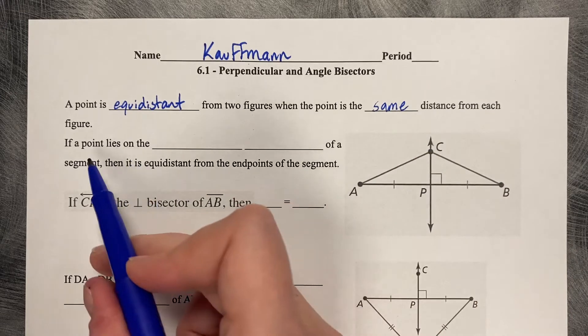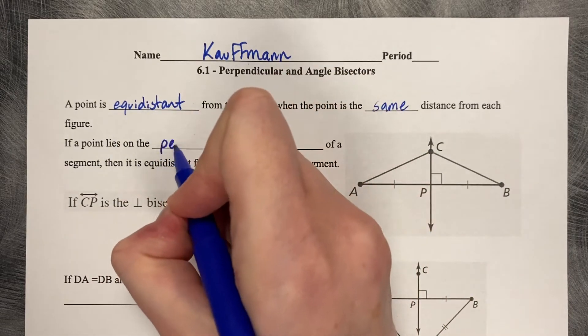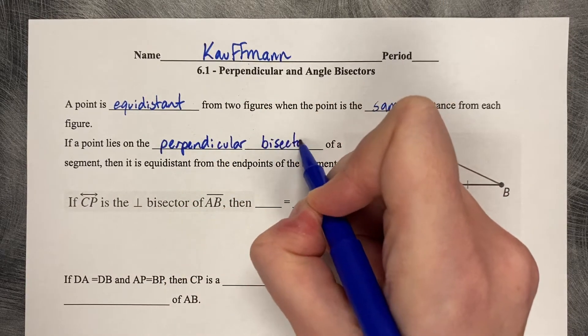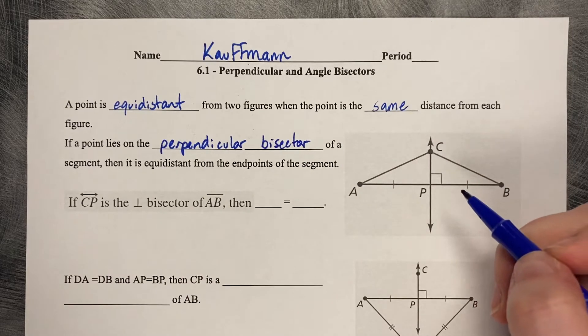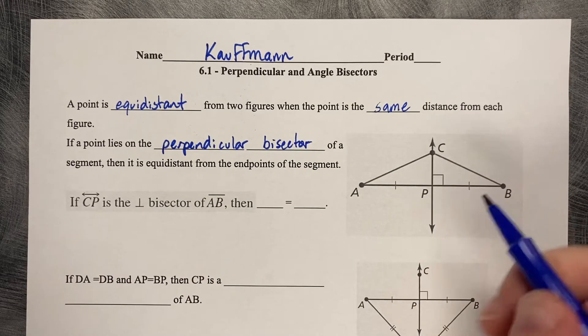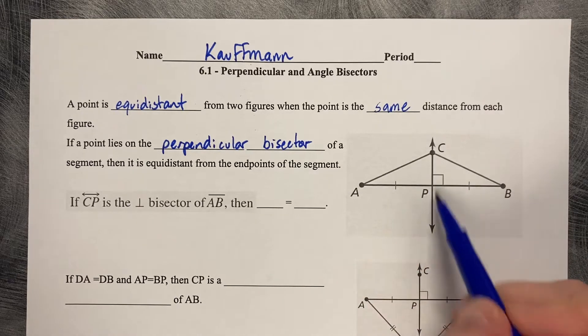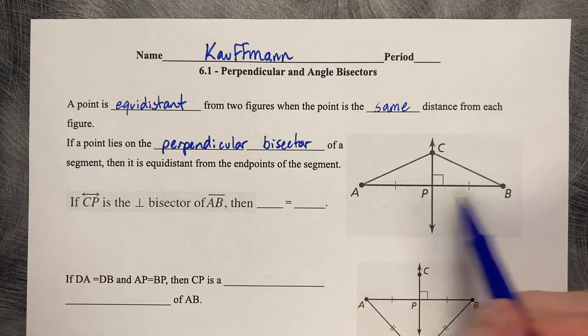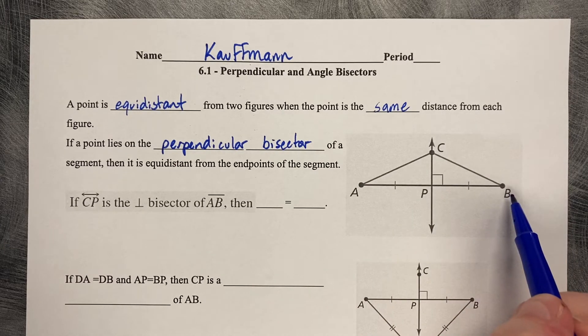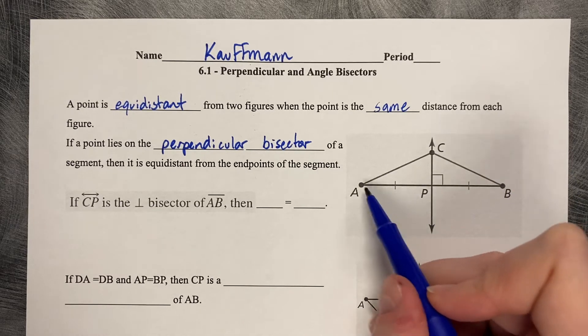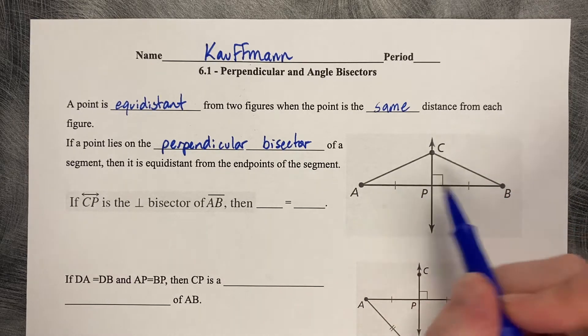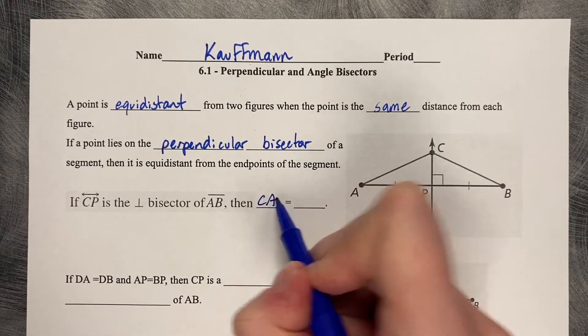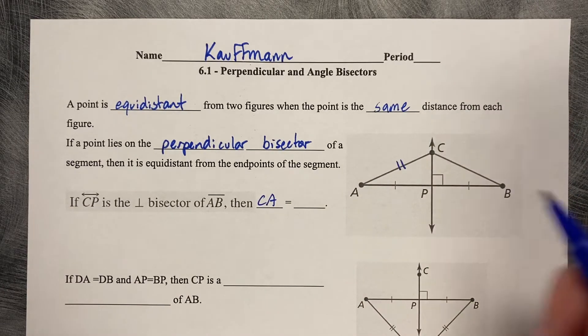This is the key today: if a point lies on the perpendicular bisector of a segment, then it is equidistant from the endpoints of the segment. So we're saying that if CP, that segment, is a perpendicular bisector of AB, and we can see that it's a bisector because AP is congruent to PB using the tick marks, then we can also say that CA is congruent to CB.